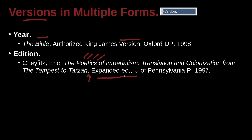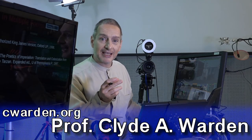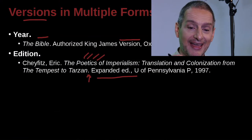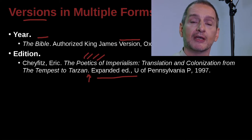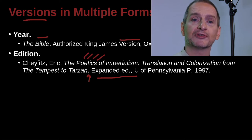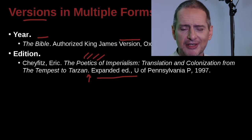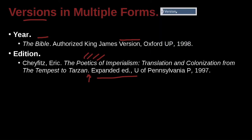How do we know it's the Expanded Edition? Because on the book cover, on the inside copyright page, it says the name: The Poetics of Imperialism, Translation and Colonization from the Tempest to Tarzan, Expanded Edition — it says that right there. It's published by the University of Pennsylvania Press, 1997.